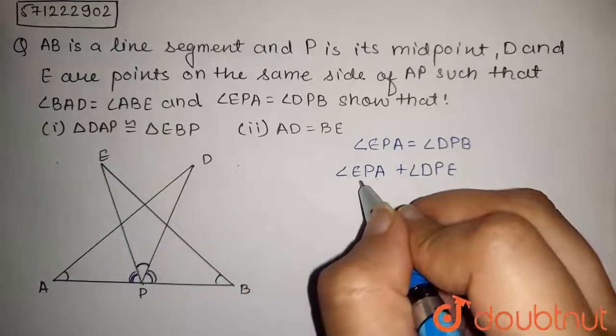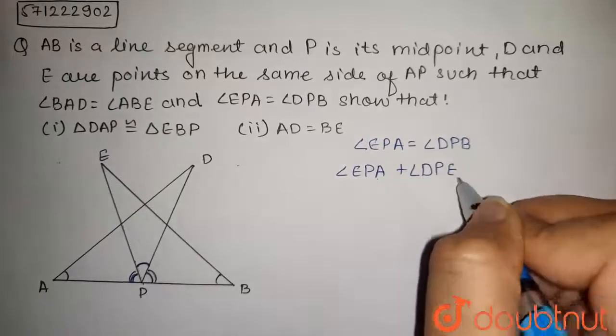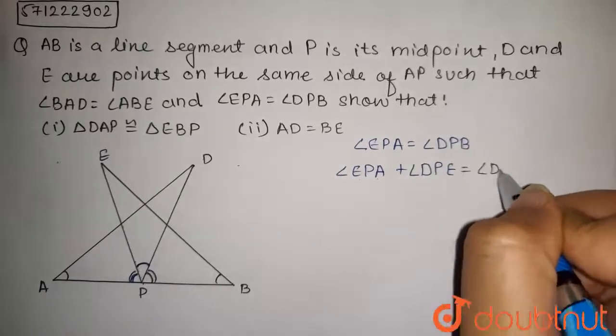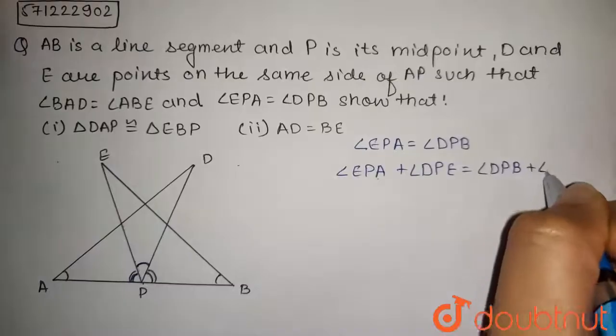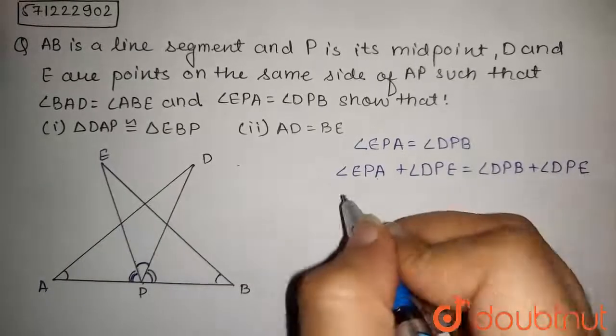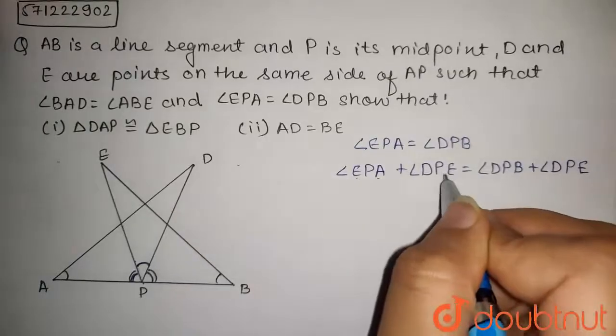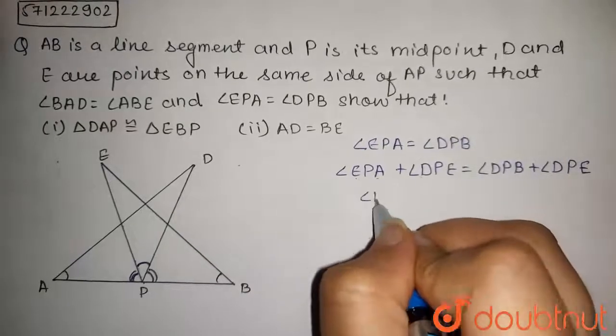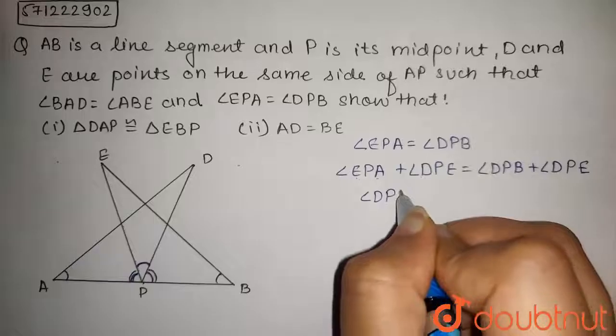So, we get angle EPA plus angle DPE is equal to angle DPB plus angle DPE. Or, this will be angle EPA plus angle DPE equals angle DPA.